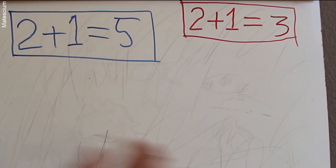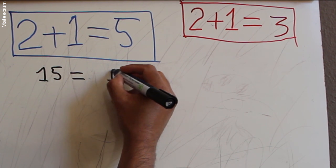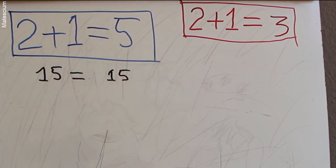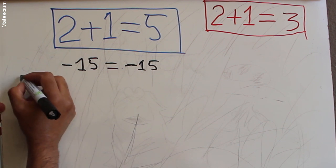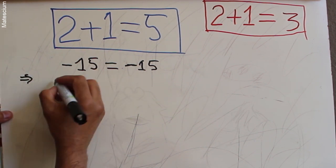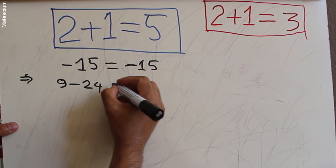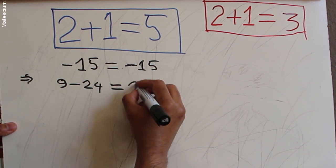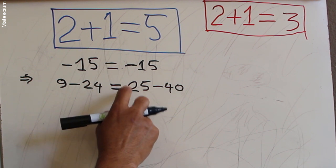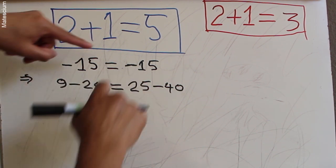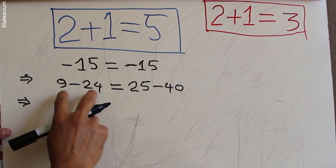In order to prove 2 plus 1 equals 5, let's consider random parameters. Let's say the parameter is minus 15 on the left-hand side and minus 15 on the right-hand side. We can rewrite minus 15 as 9 minus 24, so 9 minus 24 also equals minus 15. And we can rewrite the other minus 15 as 25 minus 40. These two mathematical statements support each other — there is no contradiction between them.